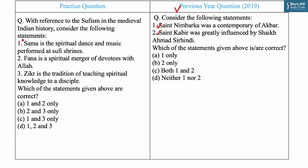The question describes key Sufi terms: Sama, Fana, and Zikr. Sama is a spiritual dance and music performed at Sufi shrines to promote the concept of Sufism — statement one is correct. Fana is the spiritual merger of the devotee with Allah — statement two is also correct. The third statement is incorrect: Sufism encourages music as a way of deepening one's relation with God, and Zikr means remembering God by reciting His name. So the correct statements are one and two only — answer A. The PYQ answer is D, neither one nor two.